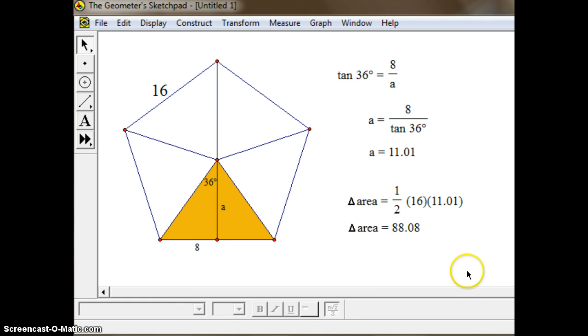And you might notice that there are five triangles there. So that ends up being our final area for the overall pentagon.